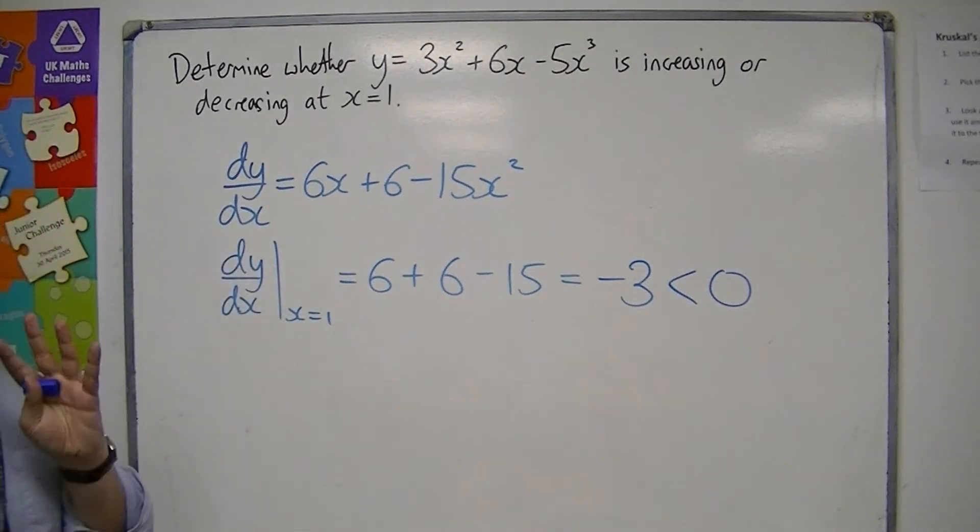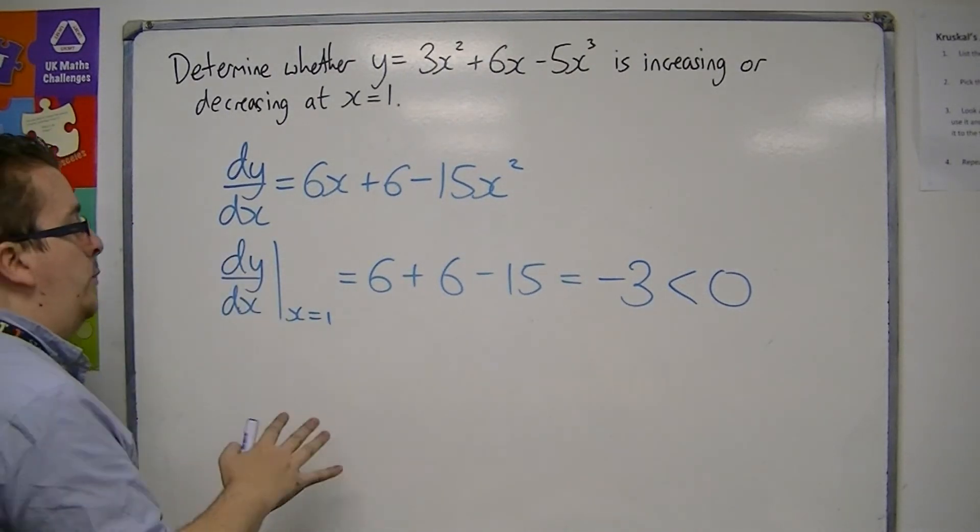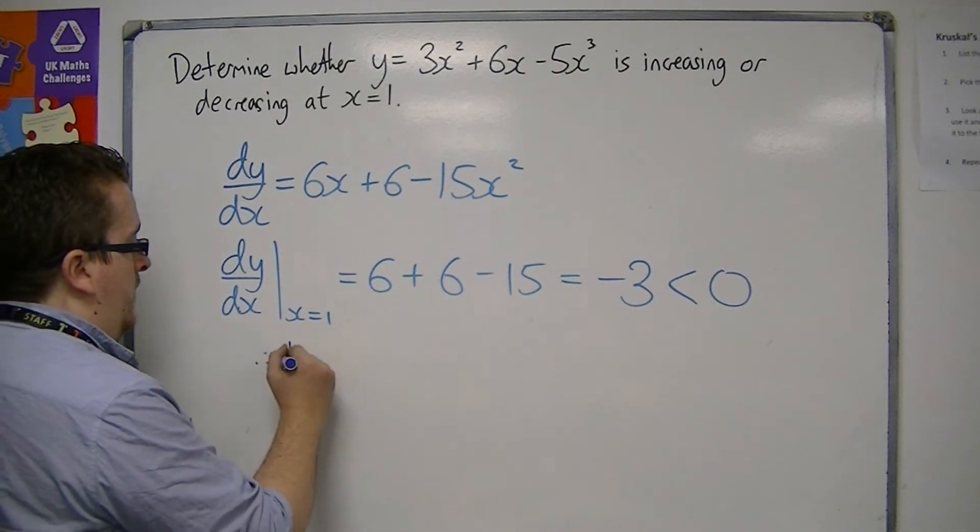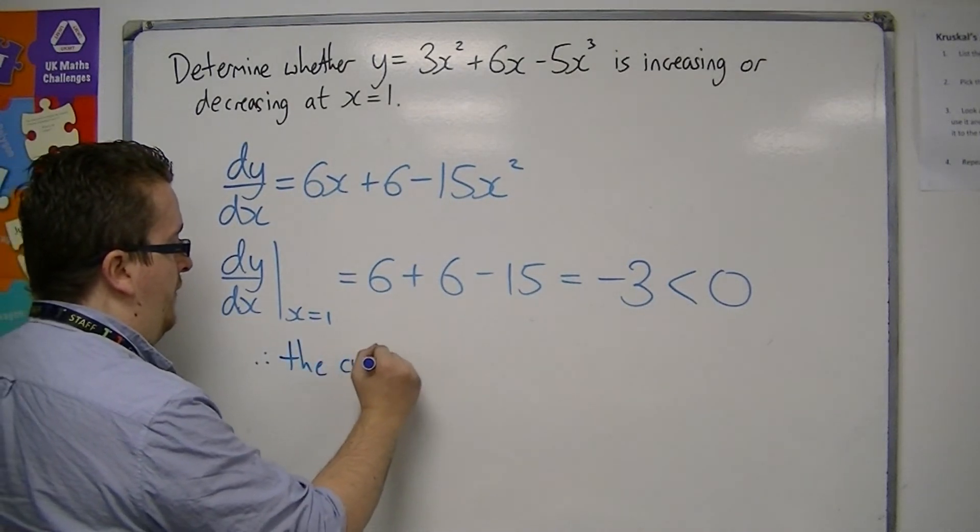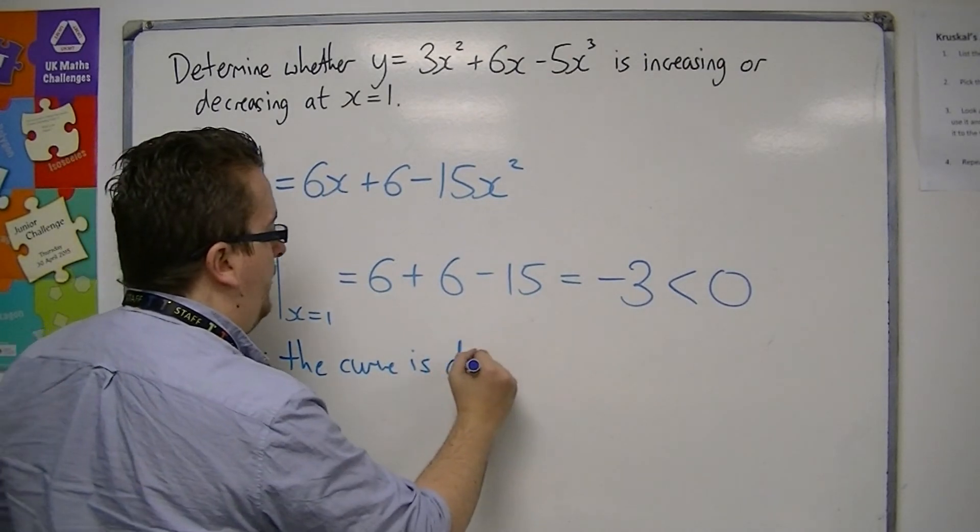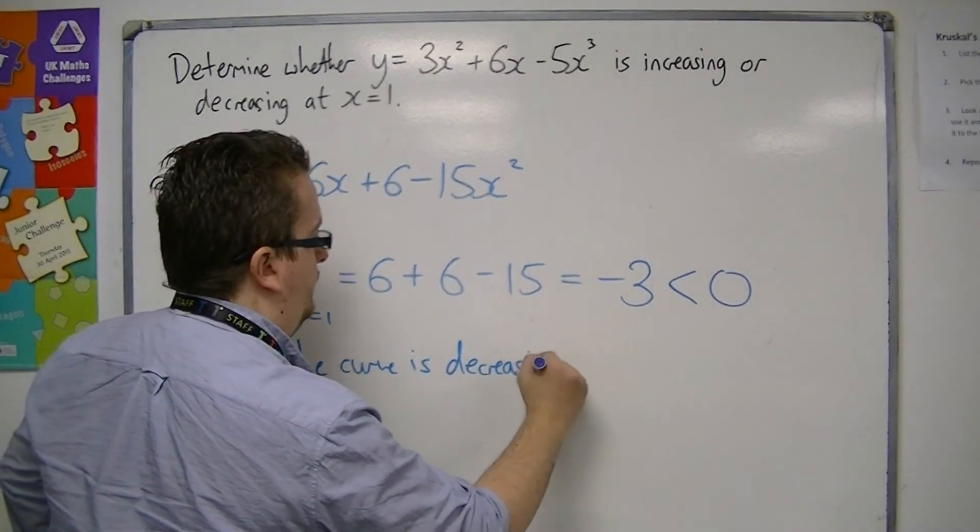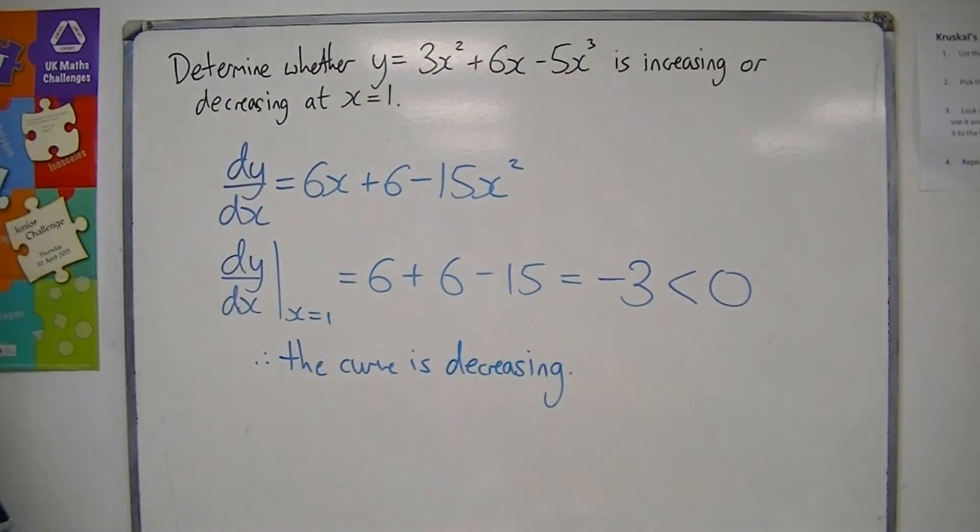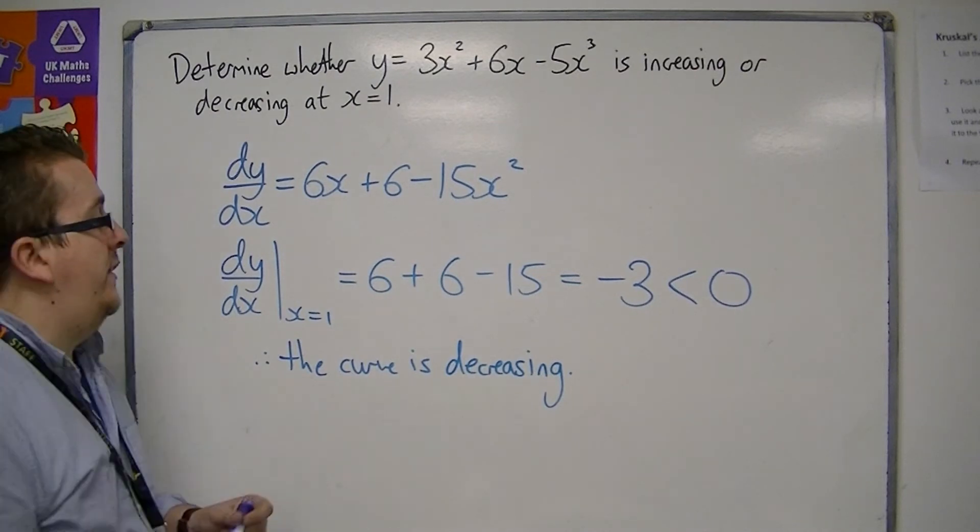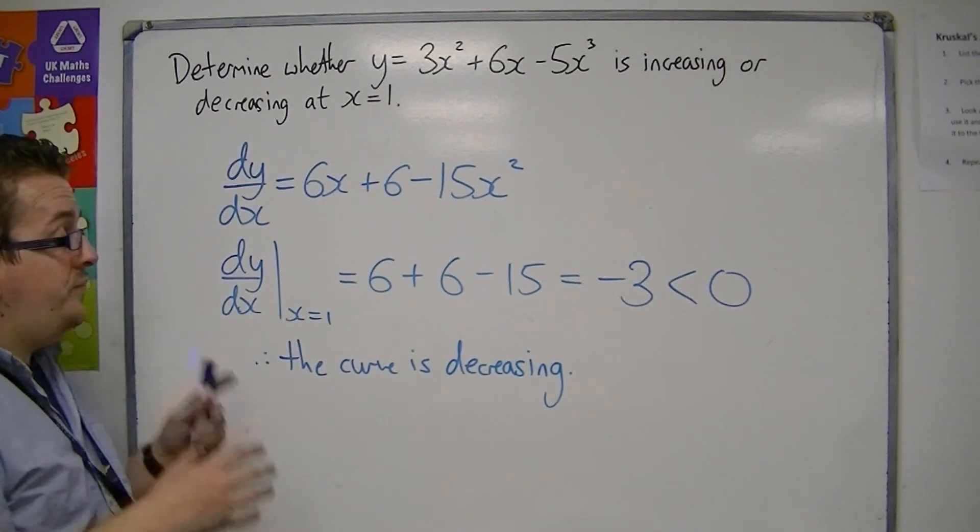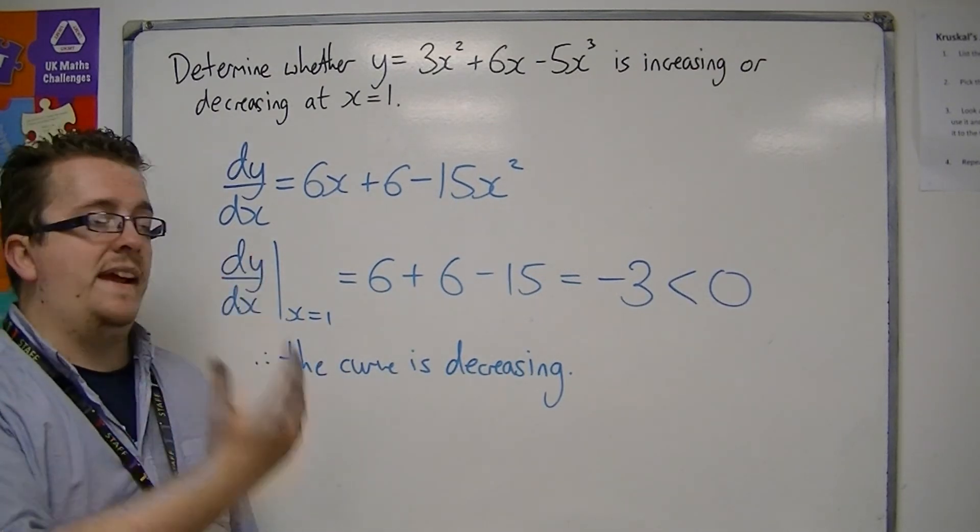So as this first derivative is negative at x equals 1, therefore the curve is decreasing. The curve is decreasing at x equals 1, because the gradient is negative.